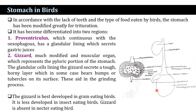In birds, in accordance with the lack of teeth and the type of food eaten, the stomach has been greatly modified for trituration. It is differentiated into two regions: the proventriculus, which is continuous with the esophagus and has a glandular lining secreting gastric juice; and the gizzard, a much modified muscular organ representing the pyloric portion. The glandular cells lining the gizzard secrete a tough horny layer bearing bumps or tubercles that aid in grinding. The gizzard is best developed in grain-eating birds, less developed in insect-eating birds, and absent in nectar-eating birds.